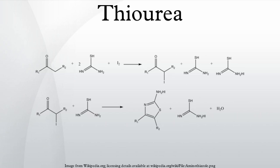Source of sulfide: thiourea is commonly employed as a source of sulfide, for example for converting alkyl halides to thiols. Such reactions proceed via the intermediacy of isothiouronium salts. The reaction capitalizes on the high nucleophilicity of the sulfur center and easy hydrolysis of the intermediate isothiouronium salt: SC(NH2)2 + RX → RSC(NH2)2+ X−; then RSC(NH2)2+ + 2 NaOH → RSNa + OC(NH2)2 + NaX; and RSNa + HCl → RSH + NaCl.